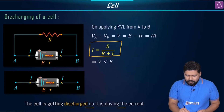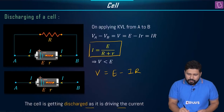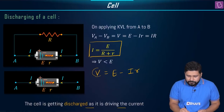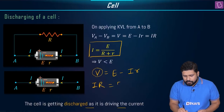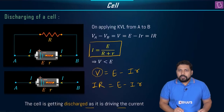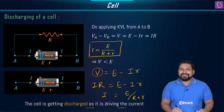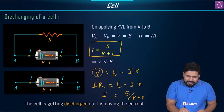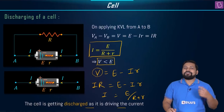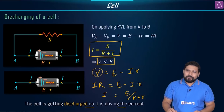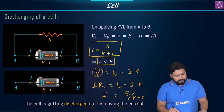We have V = E − Ir. We know V = I×R. So I×R = E − I×r. Solving for I gives I = E / (capital R + small r). And obviously while discharging, the value of EMF will always be greater than the value of terminal potential.